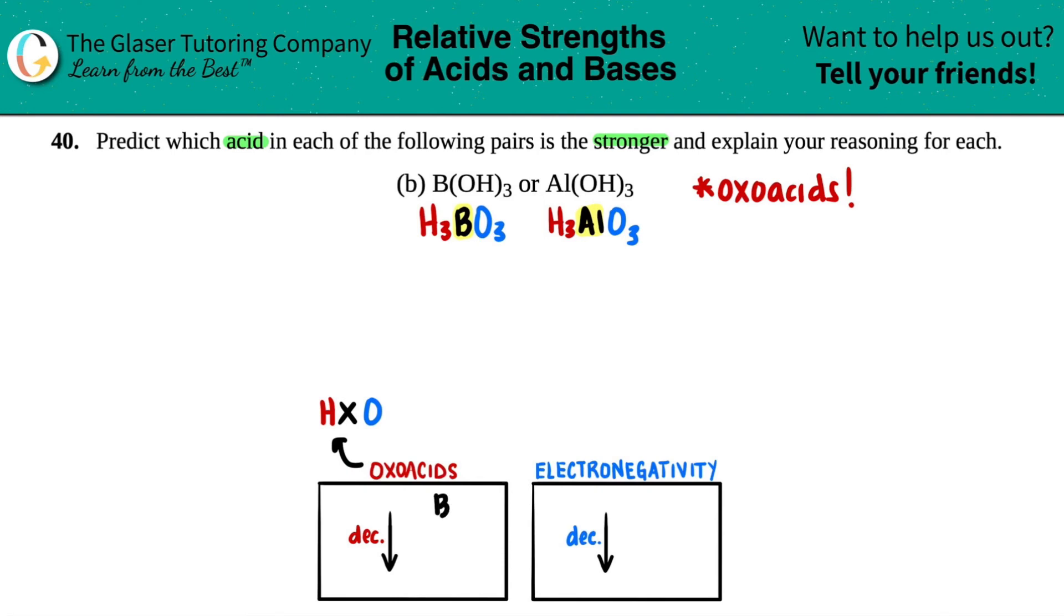And where is boron and aluminum on the periodic table? Well, boron is right up top here, and then aluminum is right below it. So B and then Al.